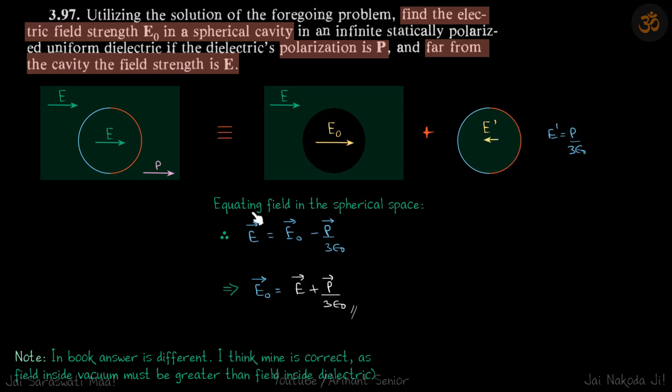So now we can equate field in the spherical space. We will equate field here as sum of this and this. So E vector inside this spherical space is equal to E0 vector minus P by 3 epsilon naught.